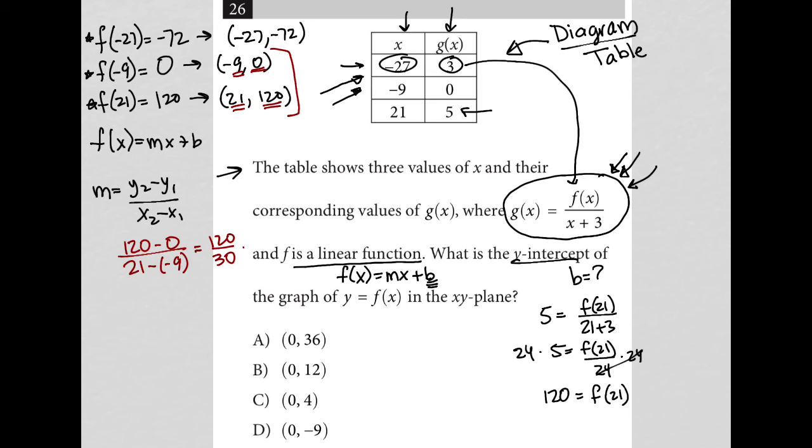And 120 divided by 30 is 4. So now I know that my slope, my m value, is 4. And I can go back and say, okay, that means f of x is equal to 4x plus b. So I'm one step closer to solving for b.